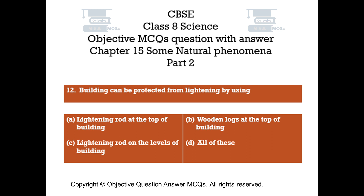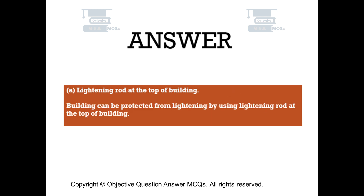Question number 12: A building can be protected from lightning by using. Option A: Lightning rod at the top of the building. Option B: Wooden logs at the top of the building. Option C: Lightning rod on the levels of the building. Option D: All of these. The right answer is Option A — lightning rod at the top of the building. A building can be protected from lightning by using a lightning rod at the top of the building.